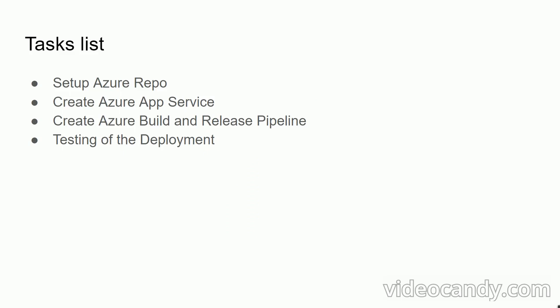In this video, we are going to set up a React-based application. First, I'll upload the source code to Azure Repo. Second, I'll create an Azure App Service with React. Third, I'll create an Azure build and release pipeline. Finally, we'll test the deployment by changing the source code and validating whether the build and release pipeline executes automatically.